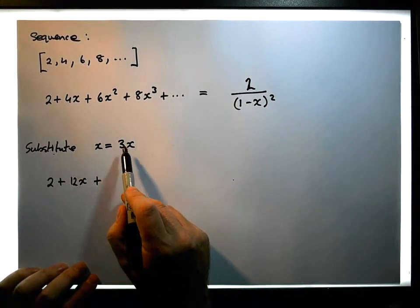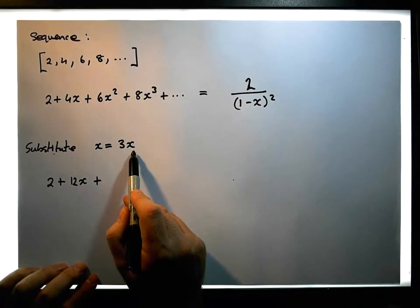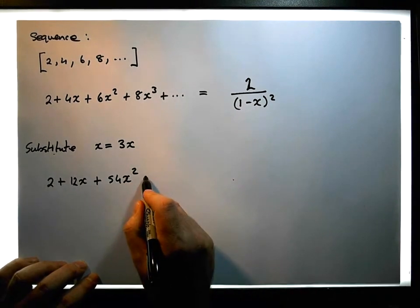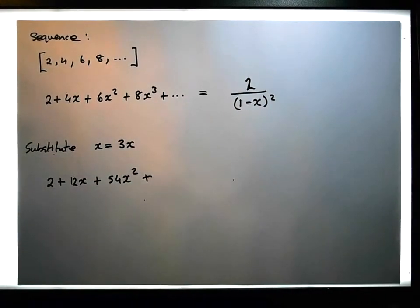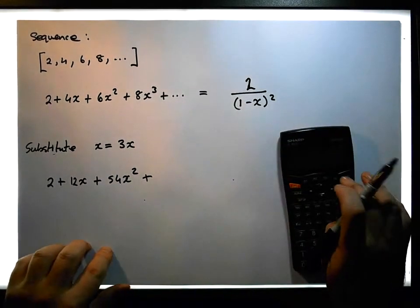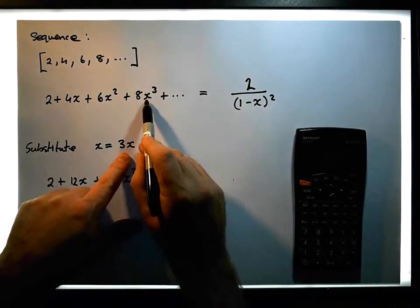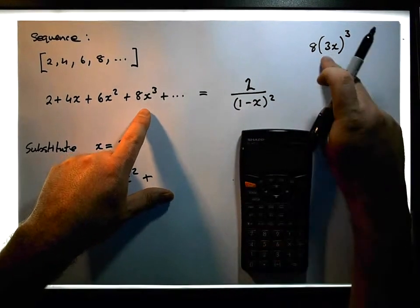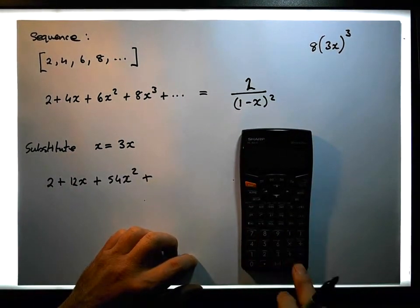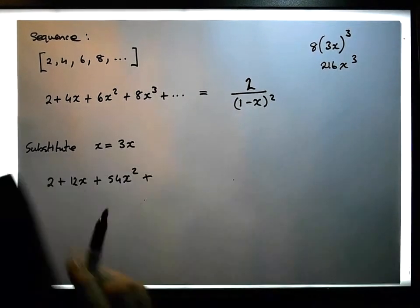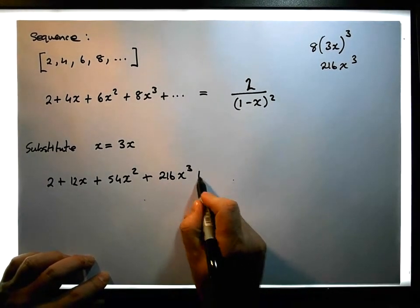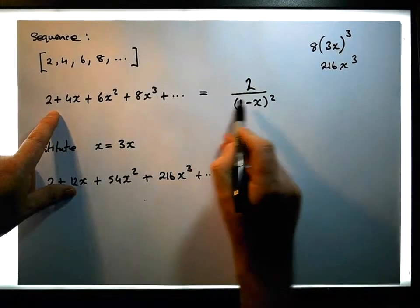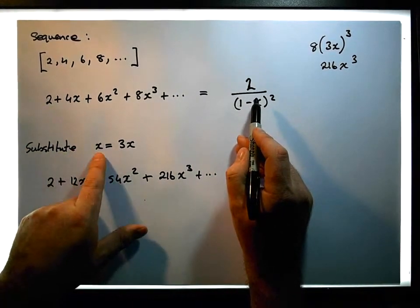Now, (3x)² is the same as 9x², and 6 times 9x² is going to give us 54x². Plus the next term: 8 times (3x)³. We know that 3³ is 27, and 27 multiplied by 8 gives us 216. So this becomes 216x³. So now what we have is 2 + 12x + 54x² + 216x³ + dot dot dot. And that must be equal to the generating function associated with this particular power series under the substitution where we change x to 3x.